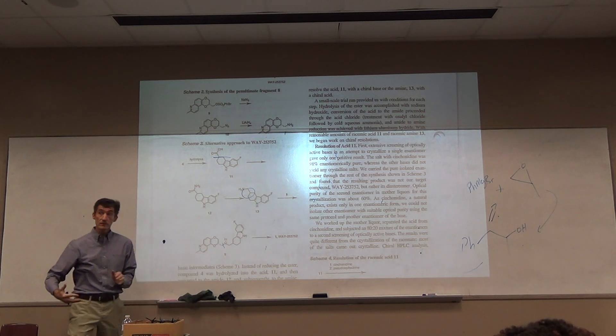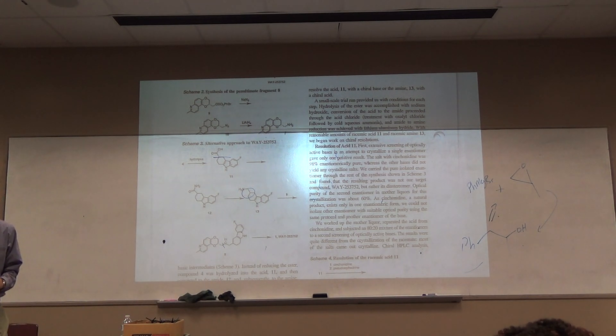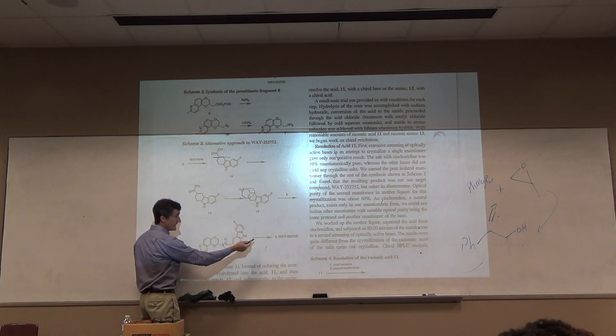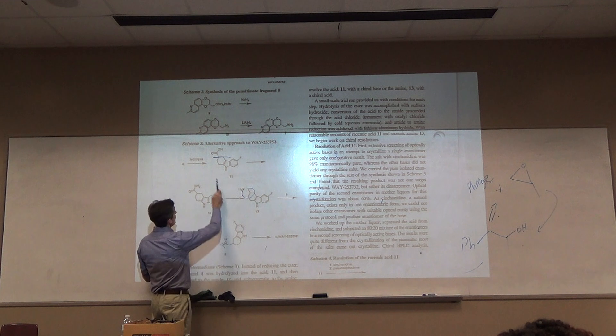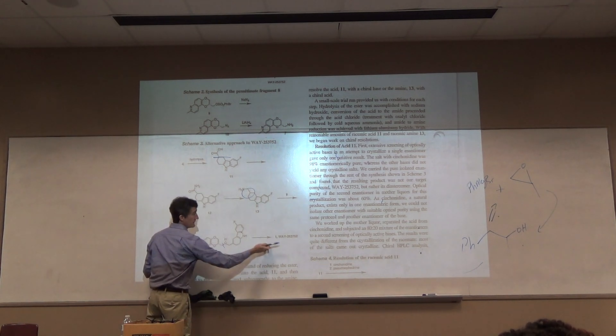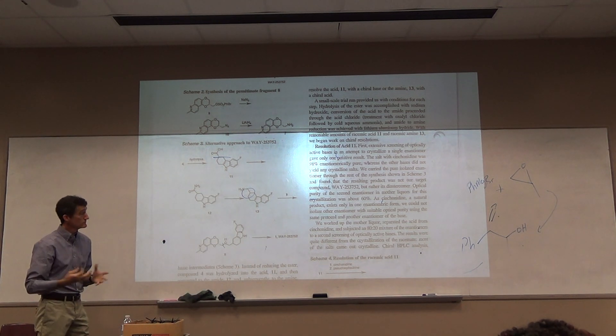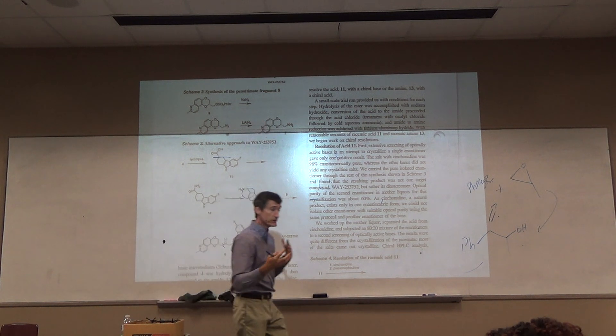And you can do direct alkylations, but they sometimes can be problematic. That's why there's lots of alternatives, a lot of indirect routes. But they are showing a direct route there. Again, I don't know what type of yield they got, they call it an alternative approach, so it must have maybe been better. But there's lots of ways to do things.